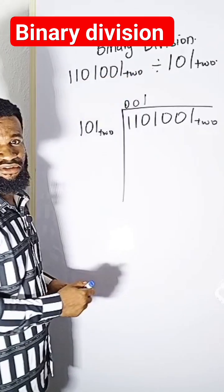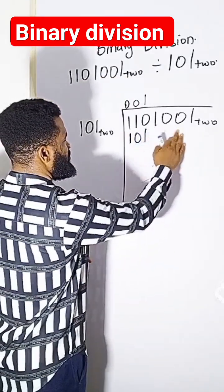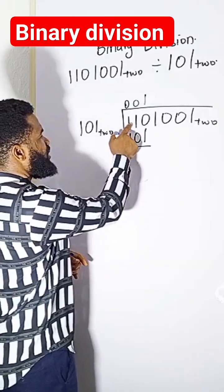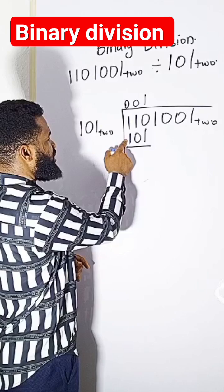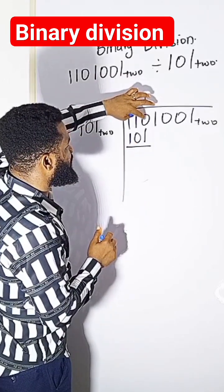I will multiply by 101, so it's going to be 101. The next thing I'm going to do is to subtract 110 minus 101. Zero cannot...